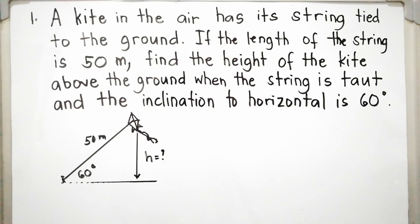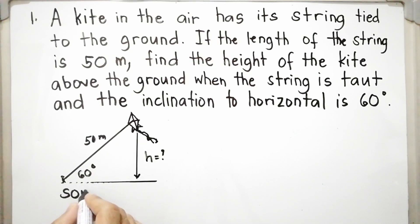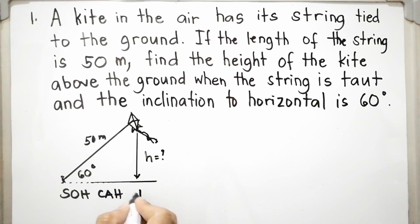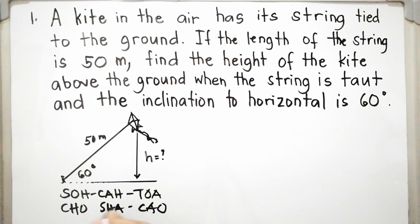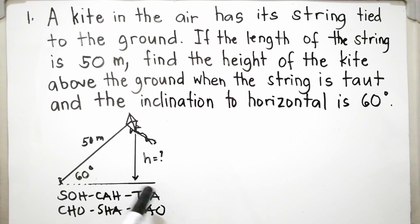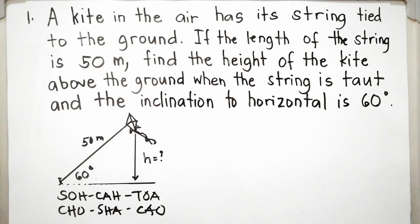The mnemonic for trigonometric functions covers sine, cosine, tangent, cosecant, secant, and cotangent. The question is: which of these six trigonometric functions will we use? We will consider the given values to decide.